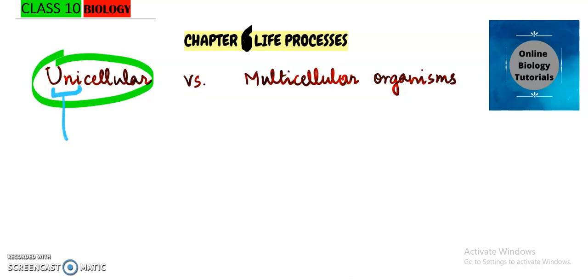Uni always means single and cellular means cells or cell. So the organisms that are made up of one cell or a single cell will be falling in the category of unicellular, whereas multi means many and cellular means cell. So all the organisms that are made up of many cells fall in the category of multicellular.